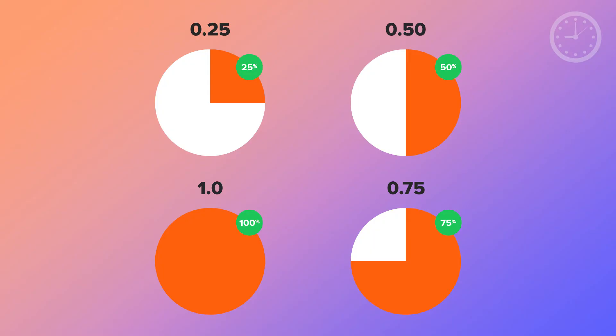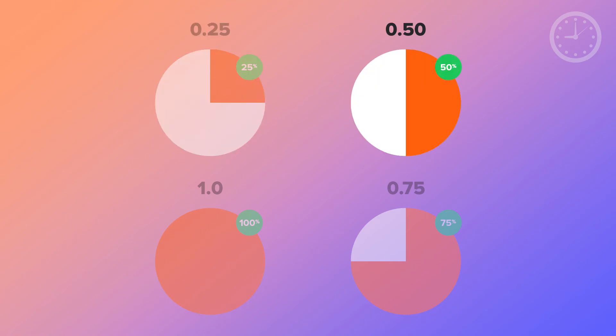There are formulas you can use that I will mention later in this video, and there are also really handy charts out there — for example, the chart you see on your screen right now. There are four key points I'd like to point out: 0.25, 0.50, 0.75, and 1.0.